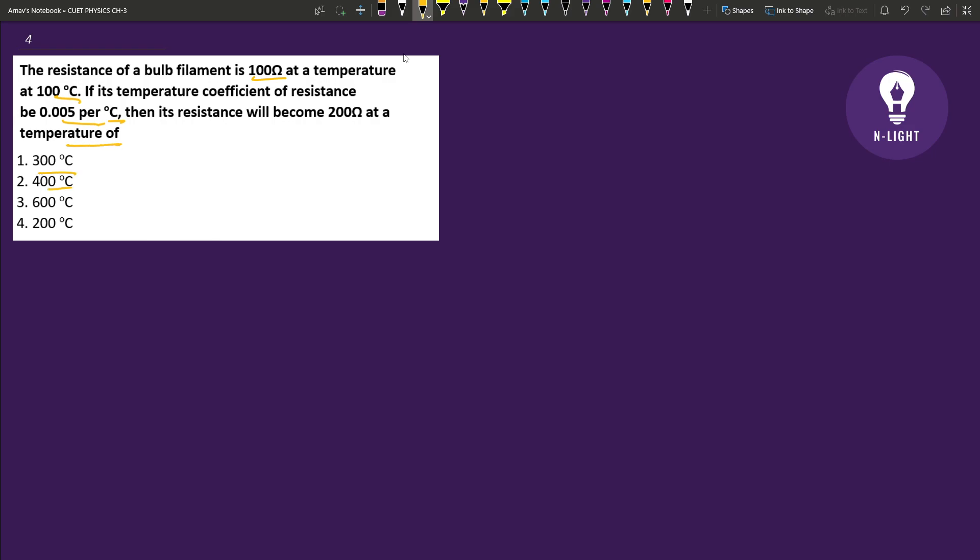We have the initial resistance and the final resistance. The temperature is 100 degrees Celsius. Now we need to find the temperature at which this resistance will be achieved.